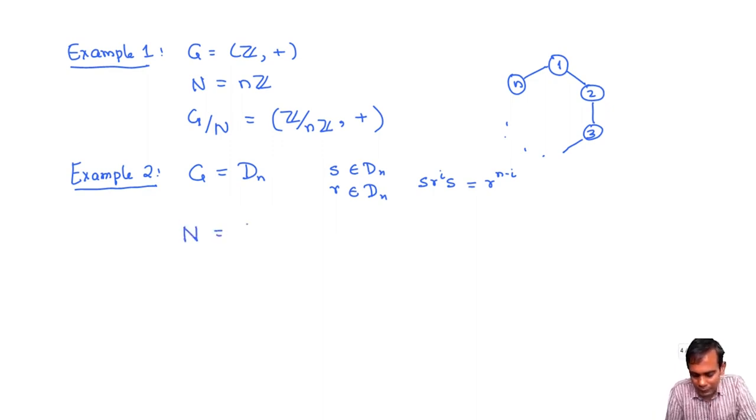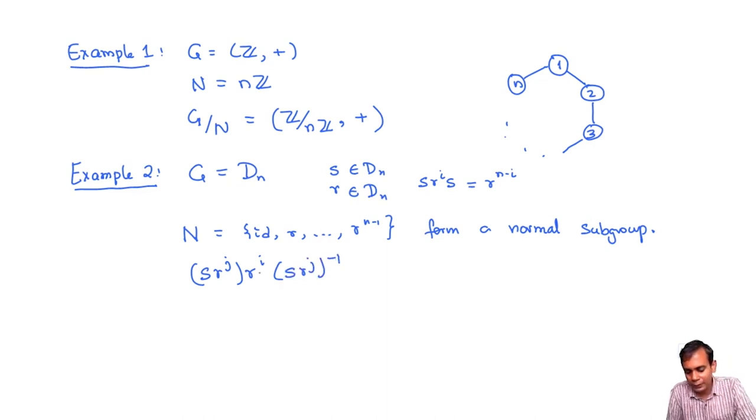Now I claim that if I take the elements identity R all the way up to R to the power N minus 1, these N elements form a normal subgroup. It's obviously a subgroup because they're just powers of R. This is isomorphic to the group Z mod NZ, and so I need to check normality. A typical element of DN is of the form SR to the J. I want to check that if I take SR to the J and I use this to conjugate any element of N, then I want to show that this is again a power of R.